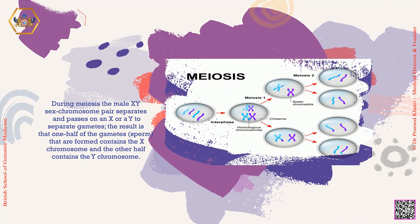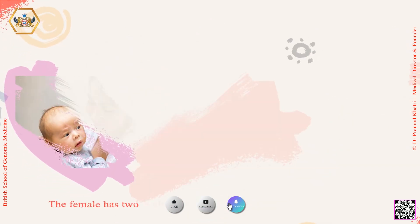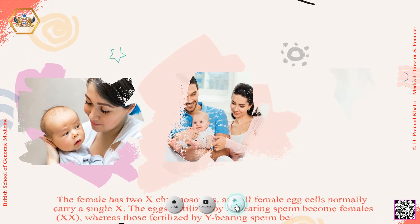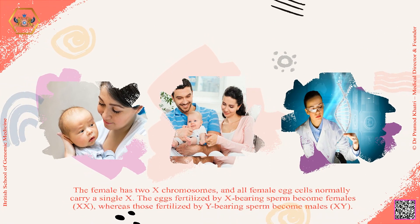The result is that one half of the gametes formed contains the X chromosome, and the other half contains the Y chromosome. The female has two X chromosomes, and all female egg cells normally carry a single X. The egg fertilized by X-bearing sperm become females, whereas those fertilized by Y-bearing sperm become males.